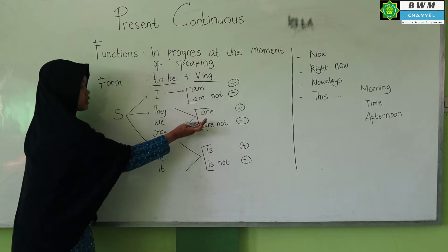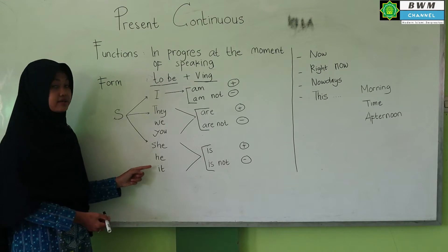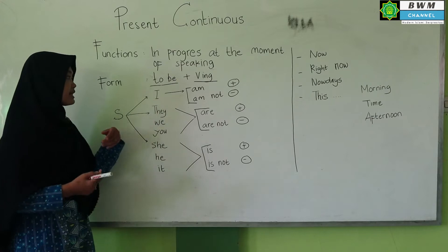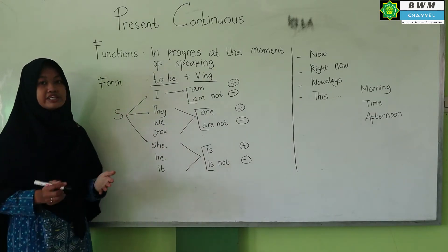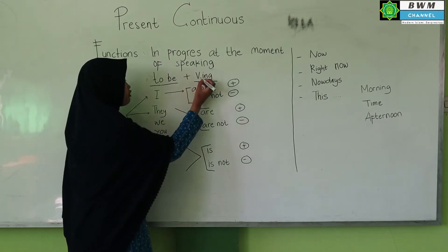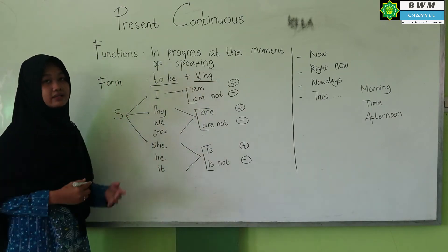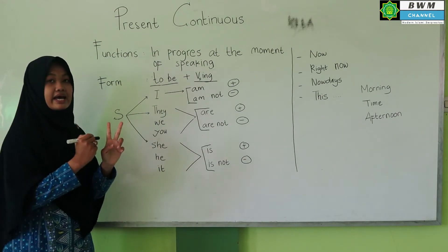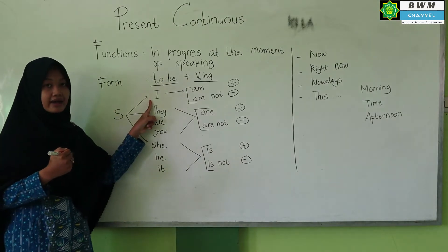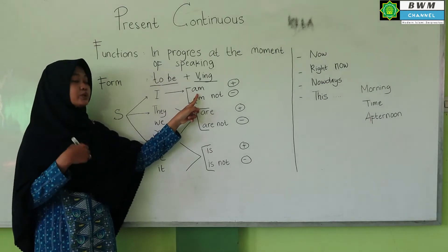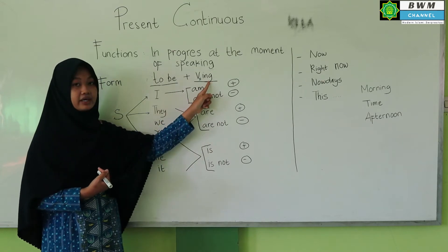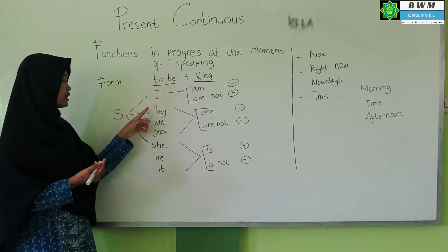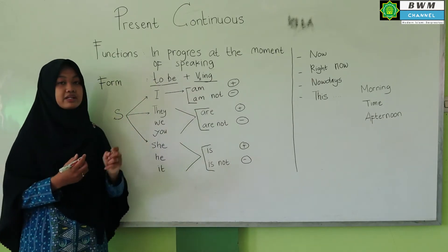So to make a Present Continuous sentence, use: Subject + To be + Verb1 + ing. For example: 'saya sedang menulis' (I am writing). Subject is I, so to be is 'am.' The verb 'menulis' in English is 'write,' plus ing becomes 'writing.' So: I am writing. That's how it works.